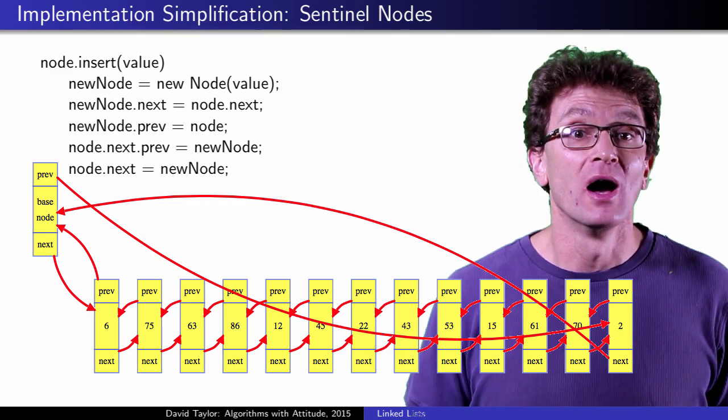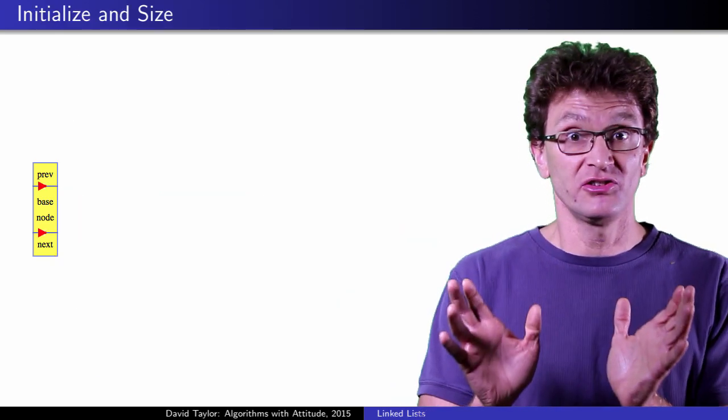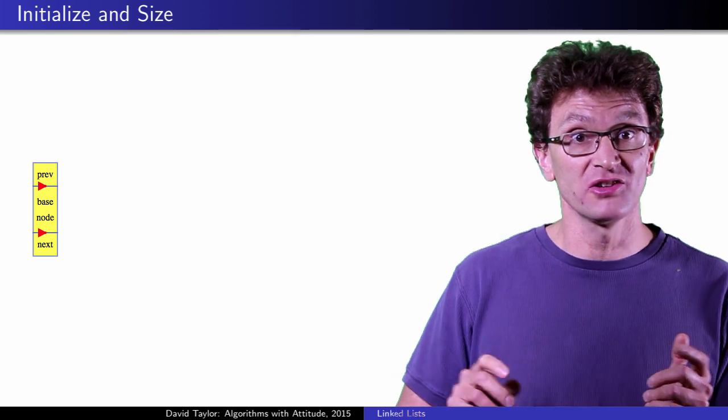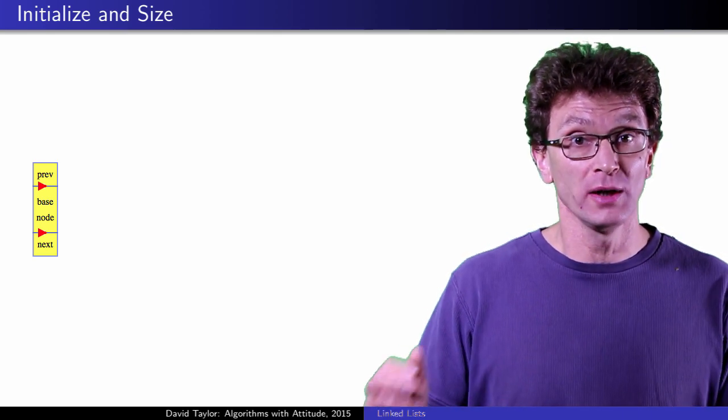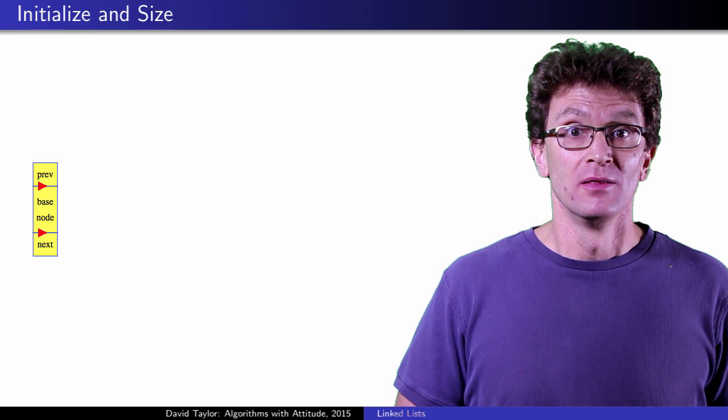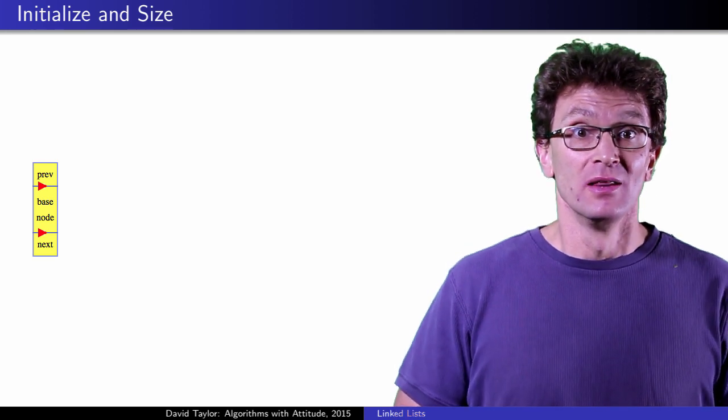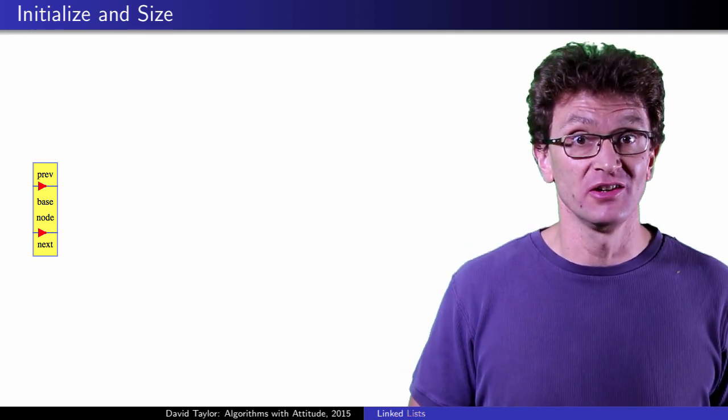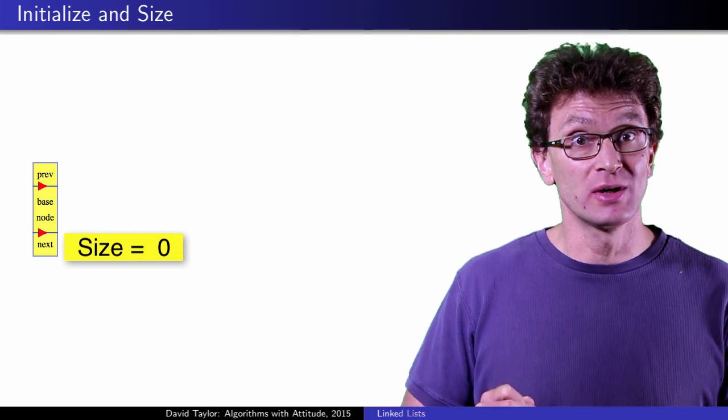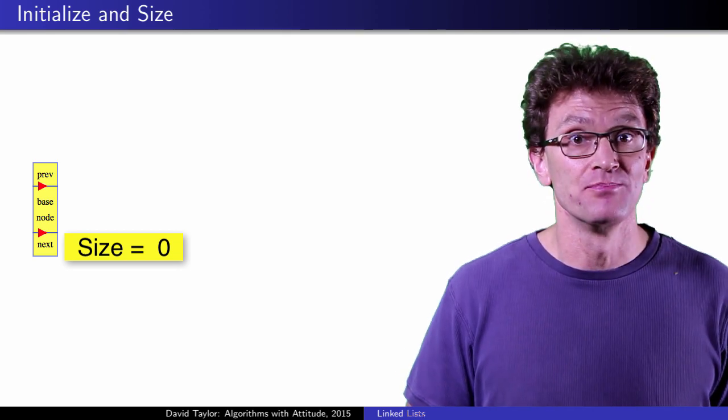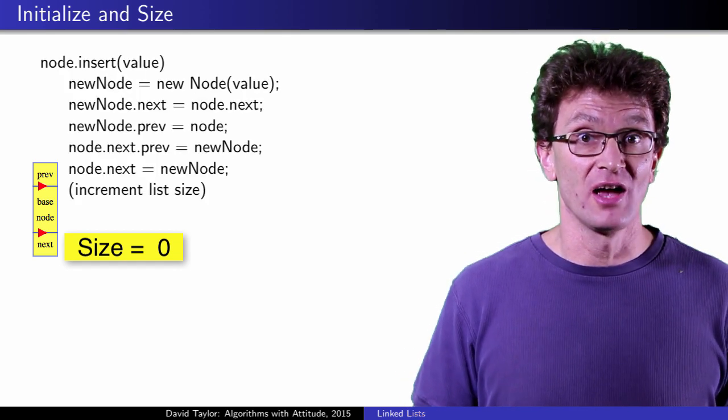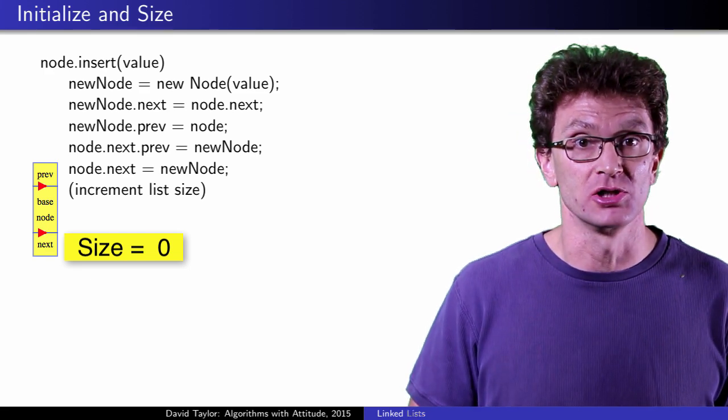So now, an empty list ends up being just a sentinel node, with both previous and next references pointing to itself. That's how we create a new list. The only other thing you need to store for the list is its size, to let you get size in constant time. Increment the list size during insertion, which is still a constant time operation.